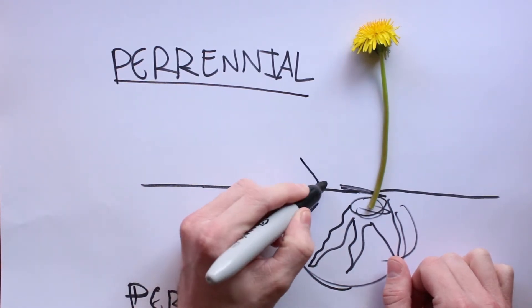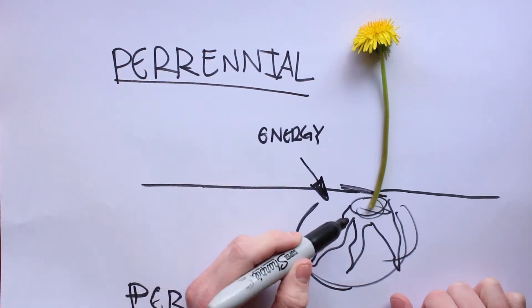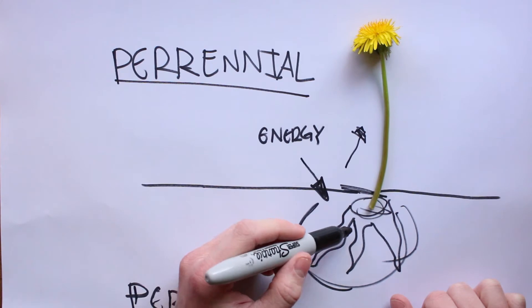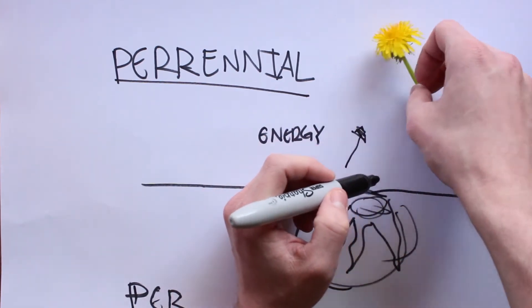And that's because they store all of their energy down in the root. They don't have to worry about growing this bit out really fast because all their energy is down here. If they lose this thing, if it gets cut off or whatever, no big deal.